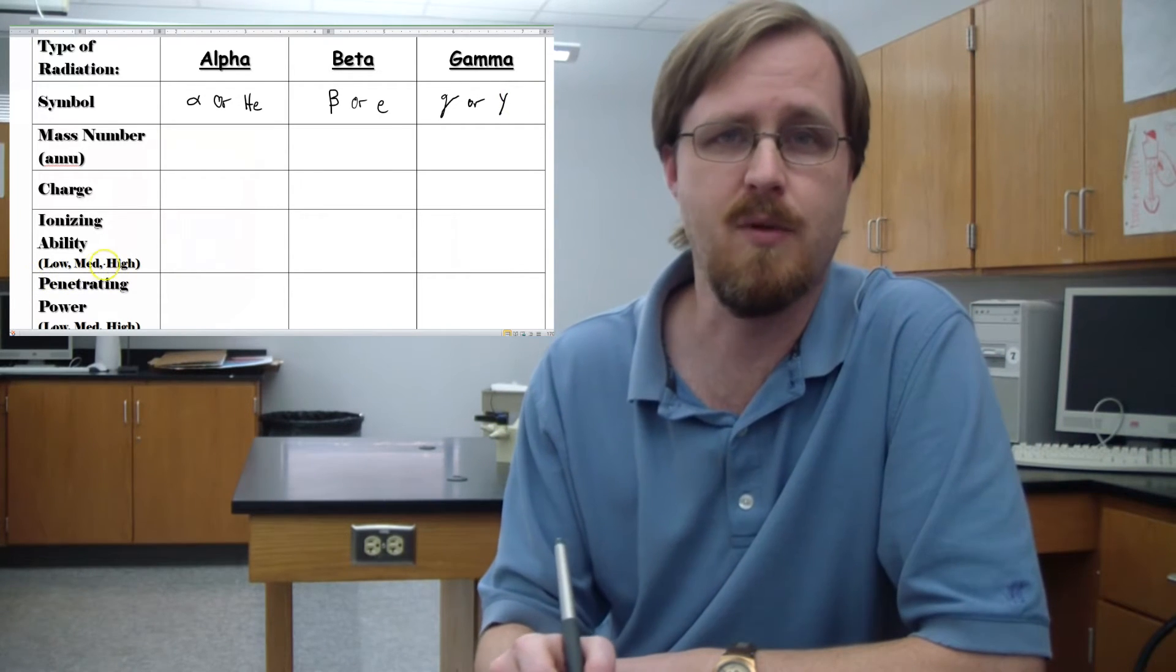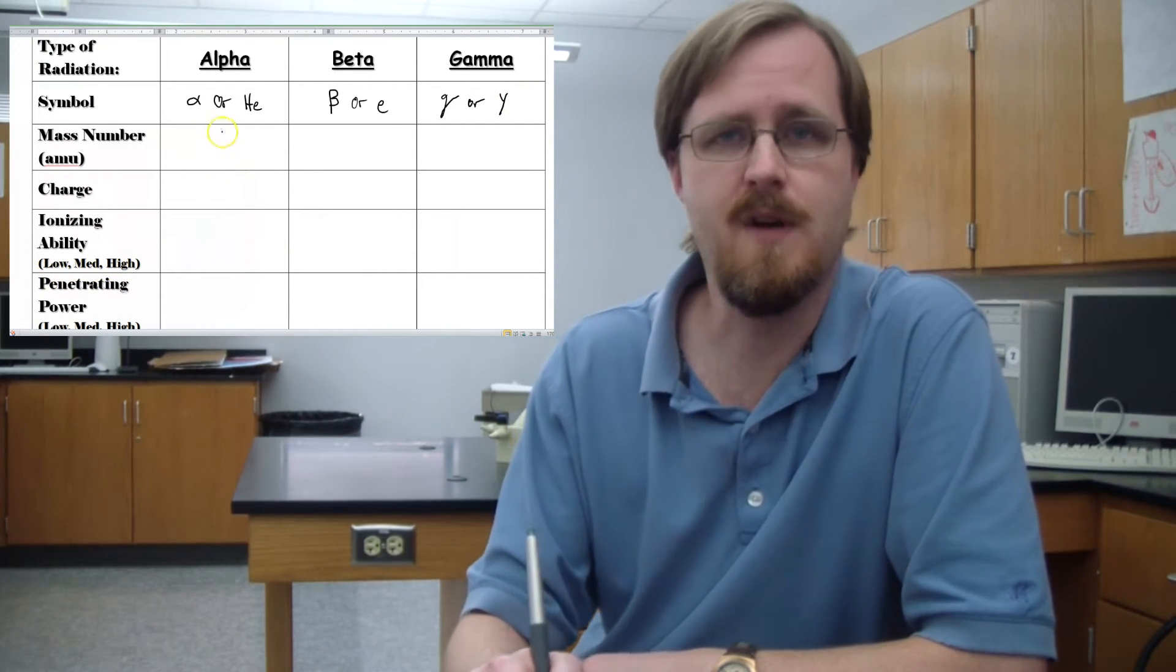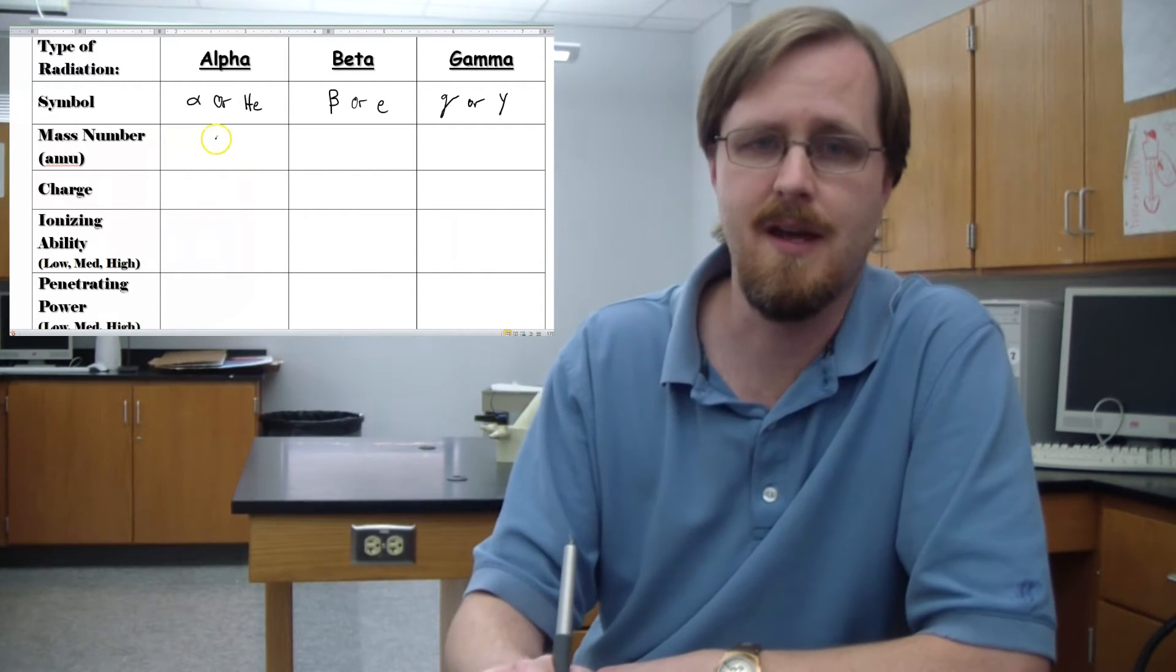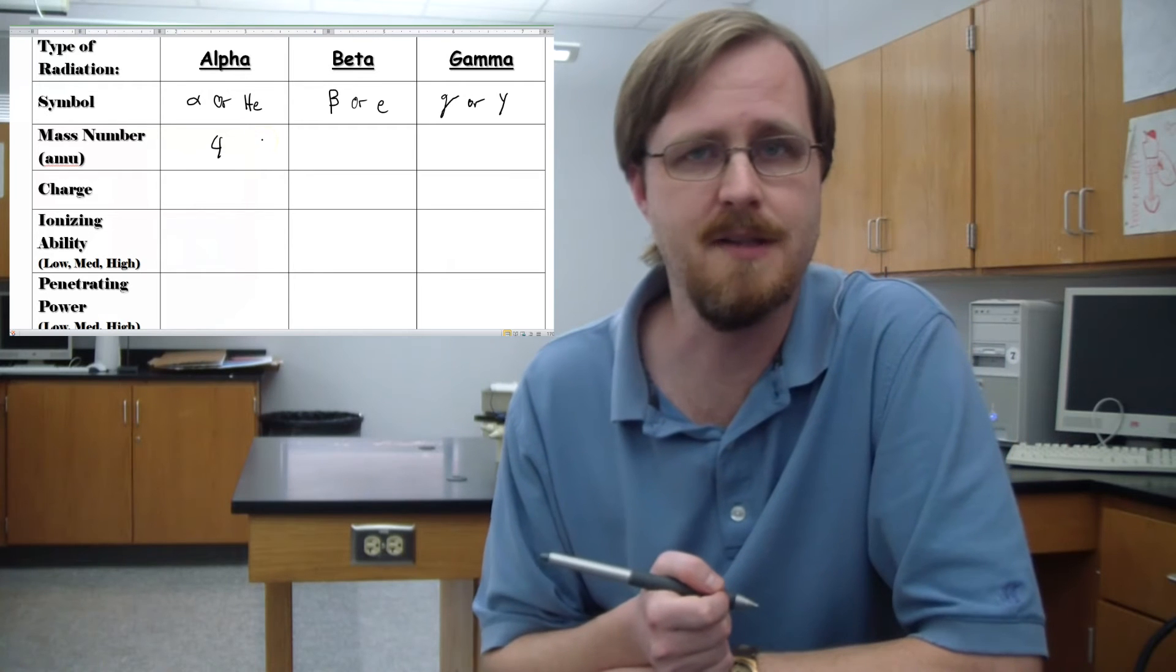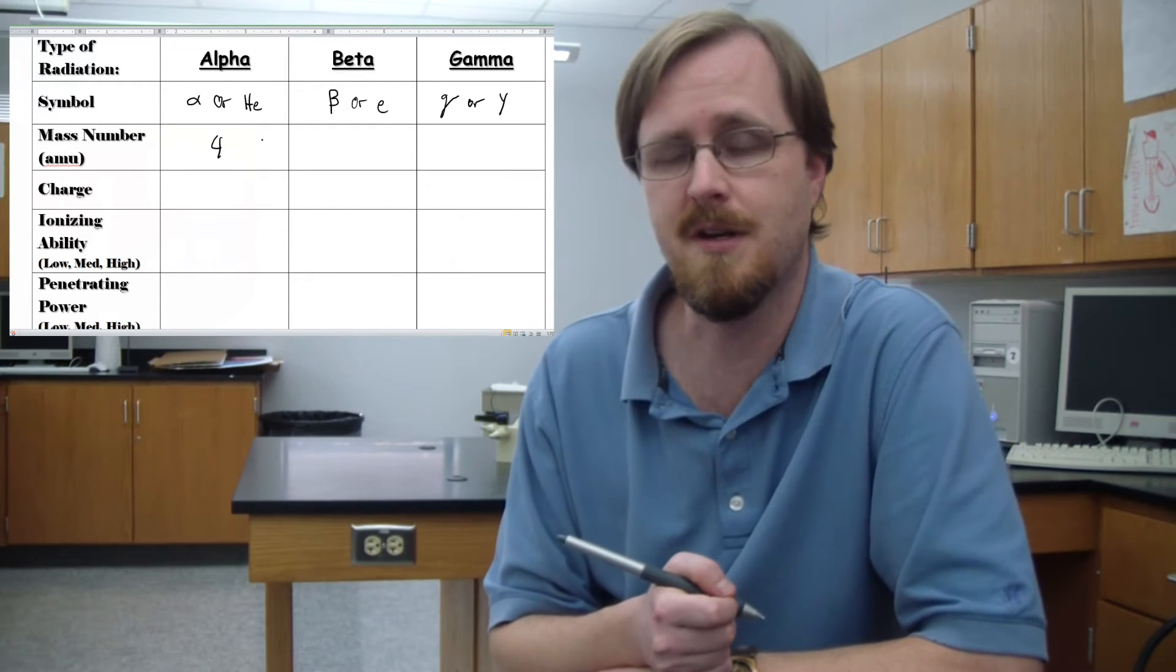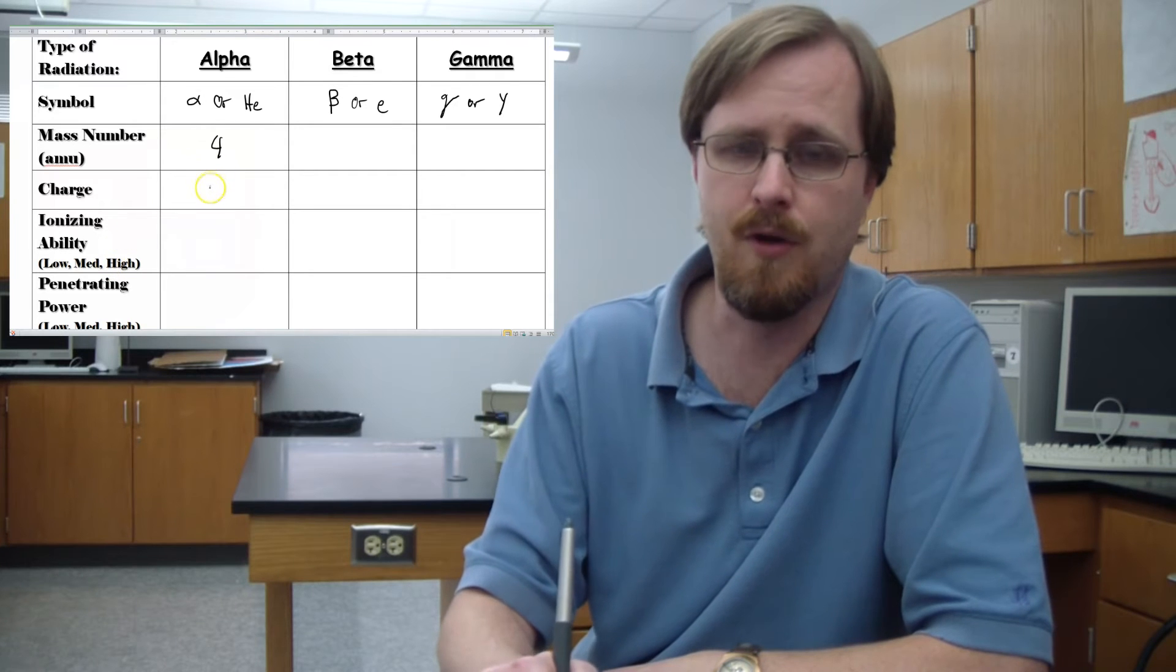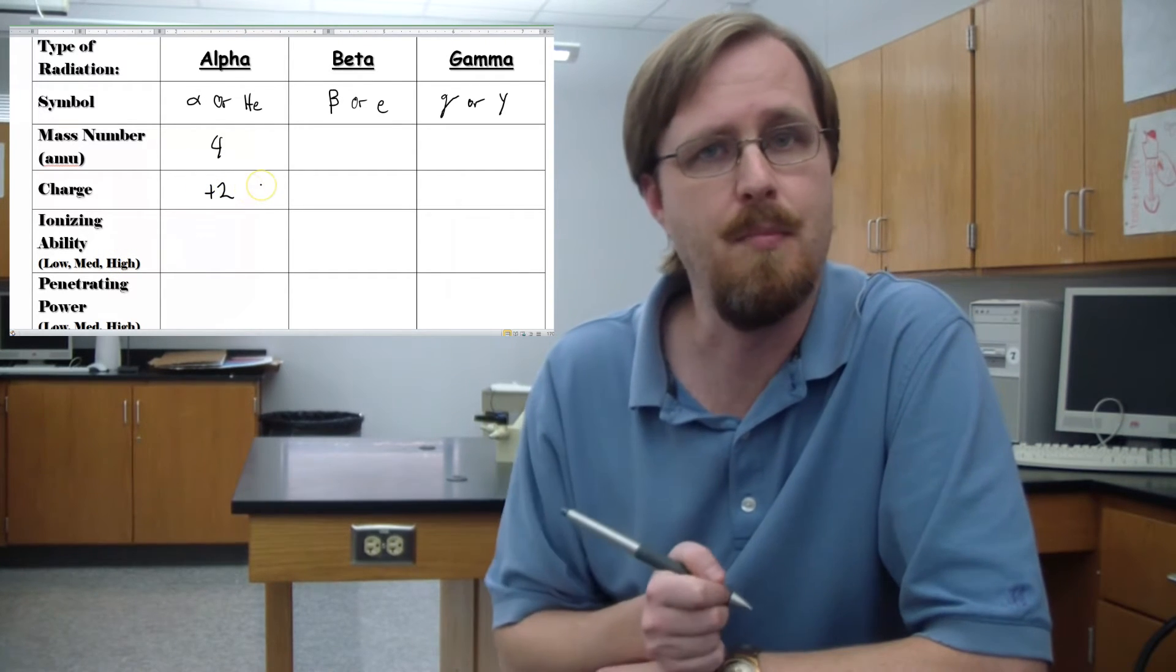So let's talk about the structure of the three particles. So we've got the alpha particle, which, as we said, is a helium nucleus. It has a mass of four because it's comprised of two protons and two neutrons, thus giving it an overall charge of plus two.